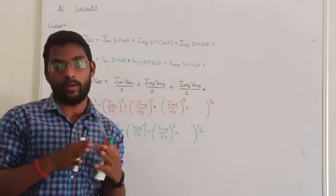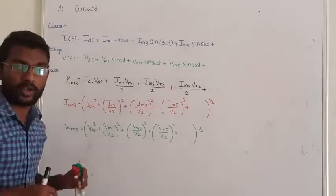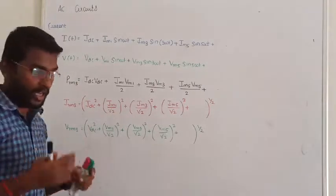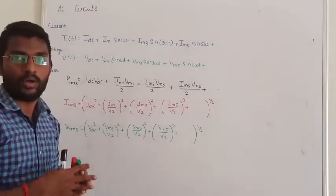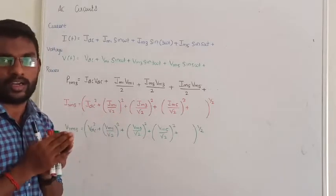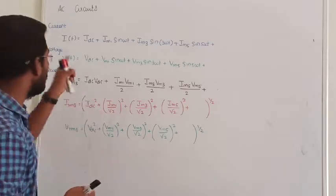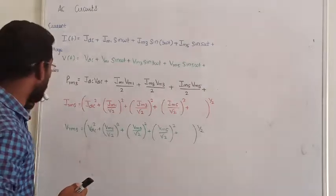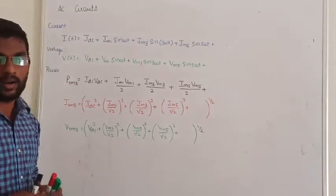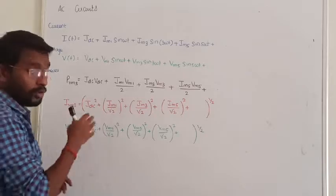The voltage and current power — when harmonics is injected into the circuit which has AC, we need to find: what is the total RMS value of the current? What is the total RMS value of the voltage? And what is the RMS value of the power? That is what we are going to calculate now.